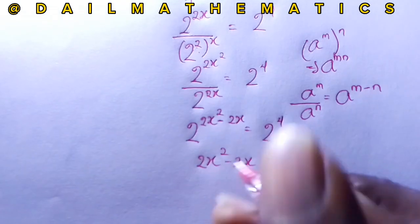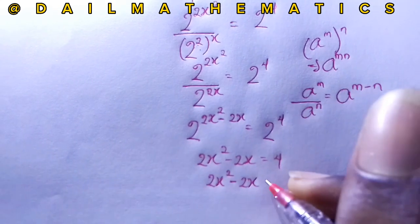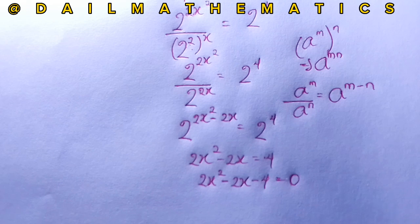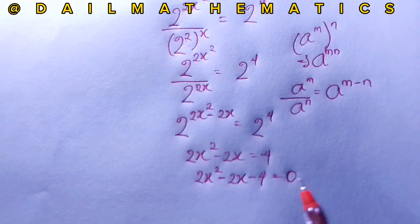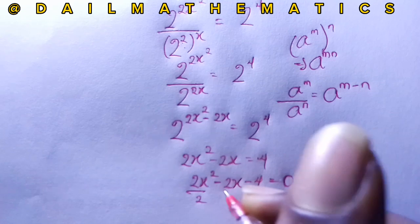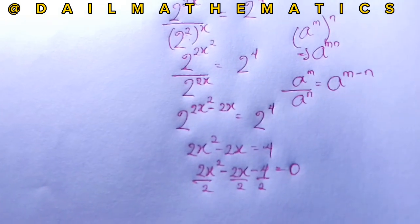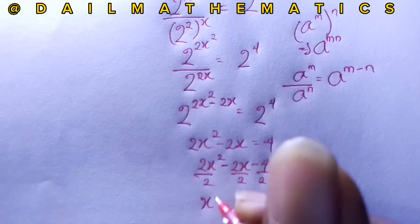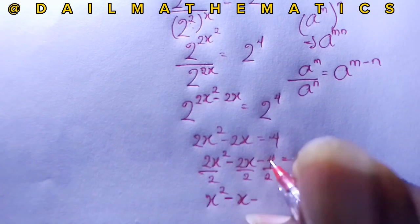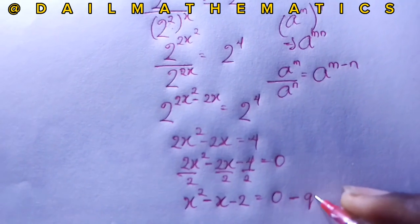We bring 4 to the other side, so 2x squared minus 2x minus 4 equals 0. This is a quadratic equation, and since all terms are multiples of 2, we divide through by 2 to simplify: x squared minus x minus 2 equals 0.